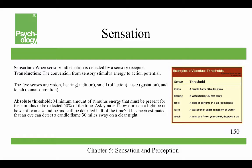Now we can talk about things like an absolute threshold — that's the minimum amount of stimulus energy that must be present for the stimulus to be detected 50% of the time. So you can ask yourself, how dim can a light be, or how soft can a sound be, and still be detected half of the time? It's been estimated that an eye can detect a candle flame at 30 miles on a clear night.